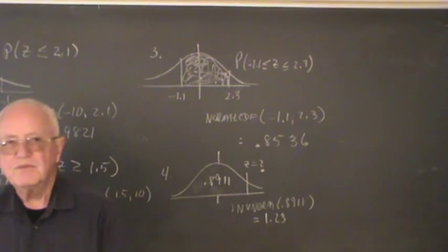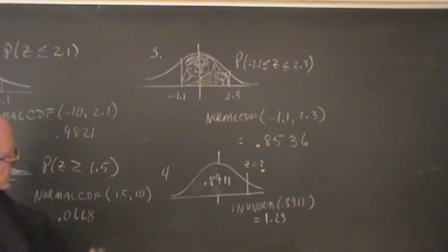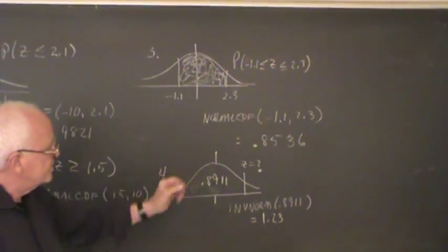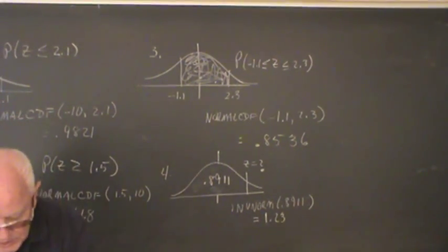Now, if you want to find the Z value when you have a probability, suppose we have a probability of 0.8911 to the left of some Z value. So I'll go to second distribution.